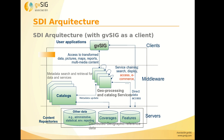Here we can see the SDI architecture where we have the client, in this case GBC. We also have the catalog where we can look for the cartography through the metadata. These catalogs can look for the cartography from the different servers. So we can look for, for example, communications in Spain, and we can get the different road layers that are available to be loaded in a GIS.